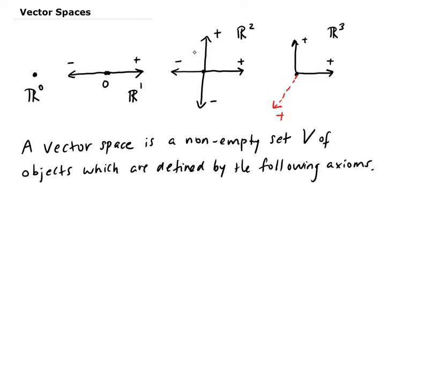We're going to let u, v, and w belong to V, where V is a vector space, and c and d are scalar values. In this case, real values. These axioms I'm about to state are going to be true for all u, v, and w, and for all c and d. Just keep that in mind.